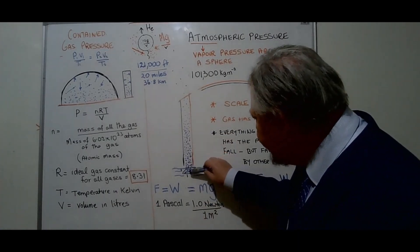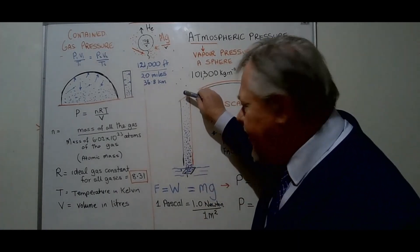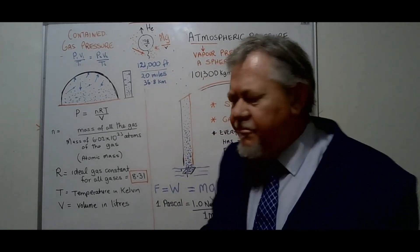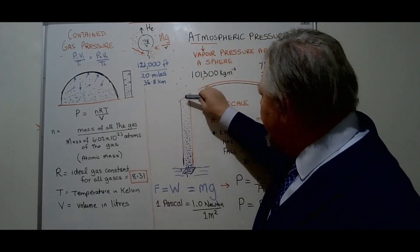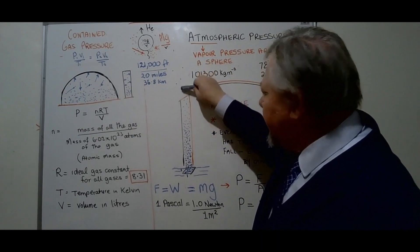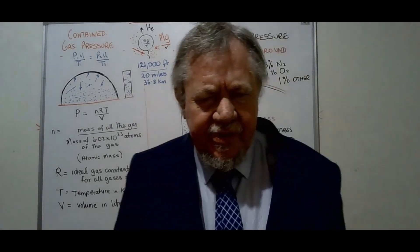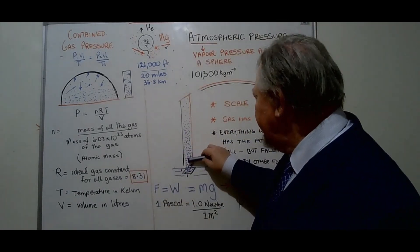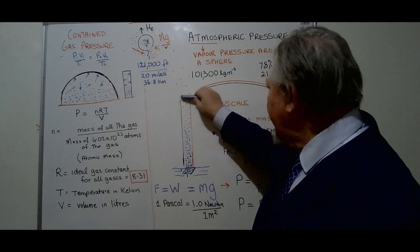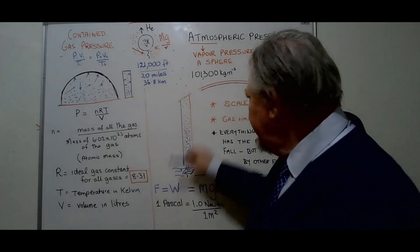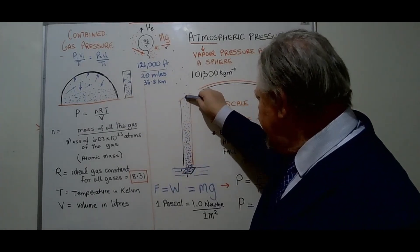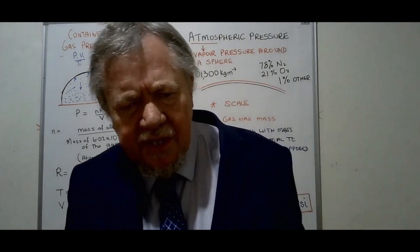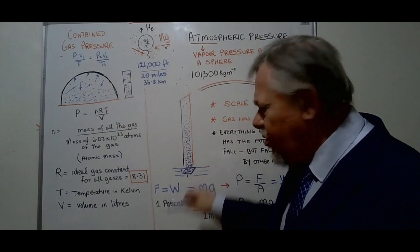This column goes from the sea all the way up as high as you can go, and to the point where the amount of gas at this end is so little that it doesn't matter anymore. Okay, so in other words, at that point, say 100 kilometers, you measure the mass of this. All of the gas that's in here, if this was a square inch over here, would weigh 14.7 pounds.